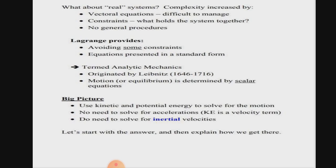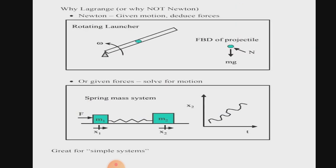What about the real system? Complexity increased by vectorial equations, constraints, no general procedure. But Lagrangian provides us avoiding some constraint equation, presenting in a standard form. So here is a picture that describes the difference between Newton and Lagrangian equation.